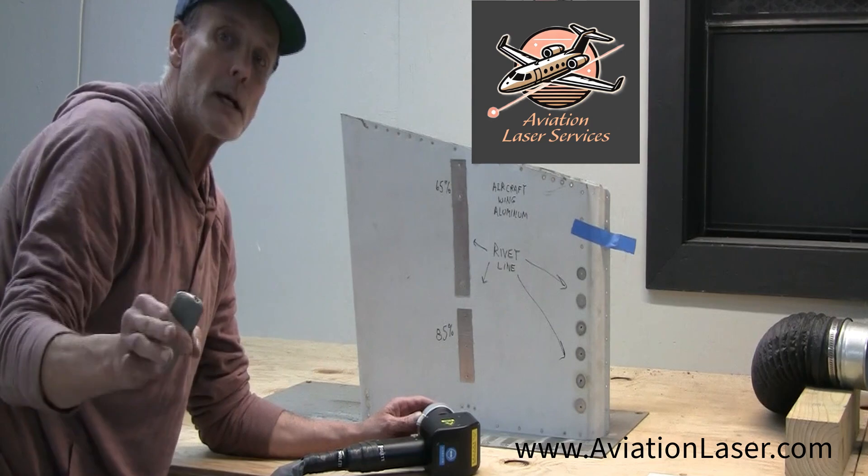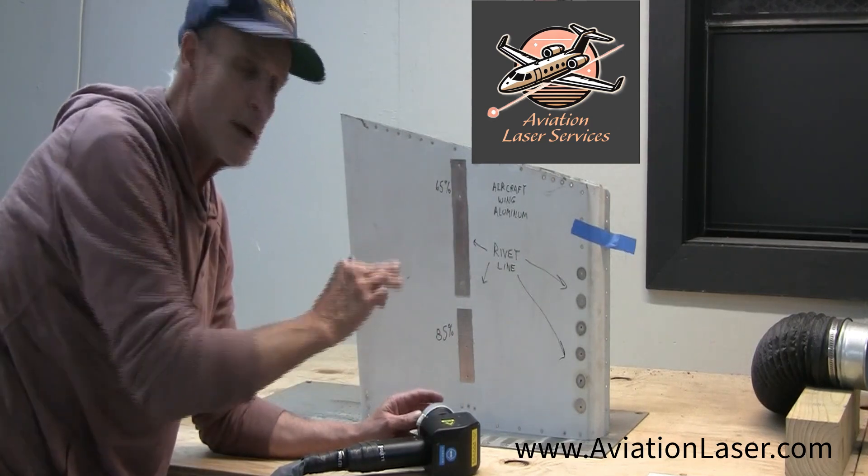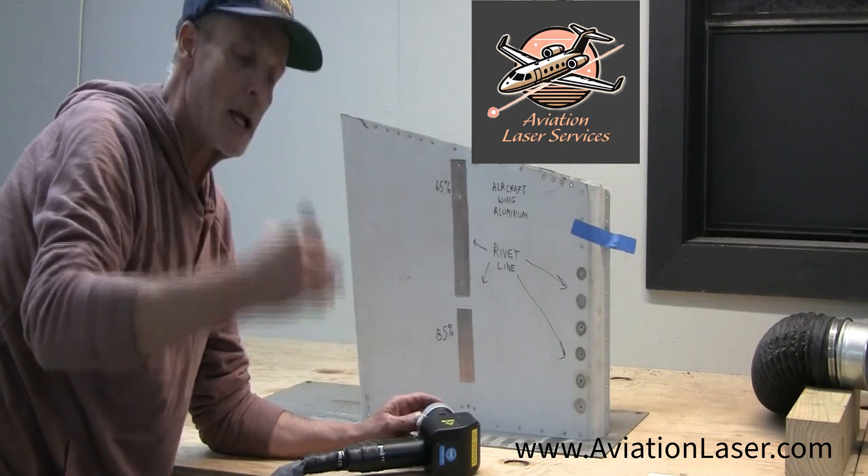In FAA regulations under the maintenance section, the only guidelines about removing paint from aircraft is there's three different methods: chemical, sandblasting, and sandpaper.